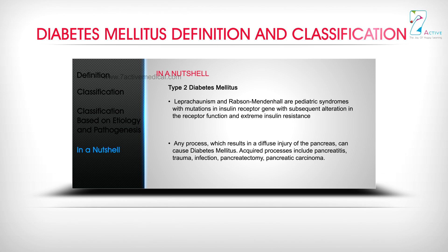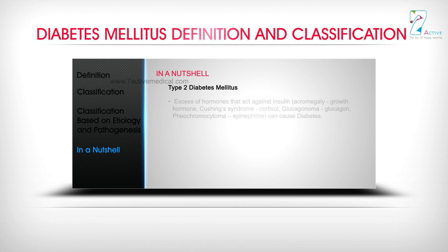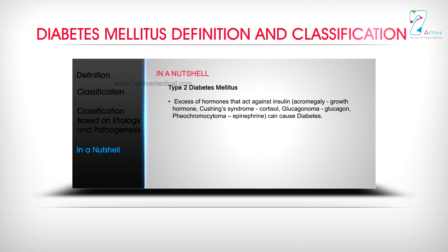Any process resulting in diffuse injury of the pancreas can cause diabetes mellitus. Acquired processes include pancreatitis, trauma, infection, pancreatic tumor, and pancreatic carcinoma. Excess of hormones that act against insulin can also cause diabetes: acromegaly (growth hormone), Cushing's syndrome (cortisol), glucagonoma (glucagon), and pheochromocytoma (epinephrine).